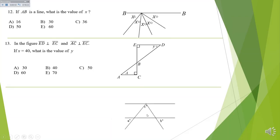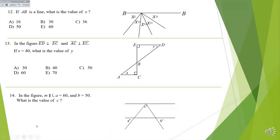Now we have more angles — we've got a triangle. If we use the vertical angle, we've got A right in there; if we use the other vertical angle, we've got B right in there. They're looking for the value of C. They said A is equal to 60 and B is equal to 50. This is very simple — you can get that answer so easily.